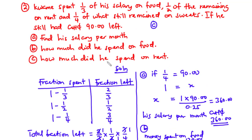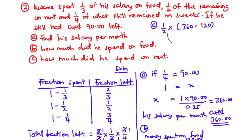For part c, we find how much he spent on rent. From the question, after spending one third of his salary on food, he spent half of the remaining on rent. So money spent on rent equals one half times the remaining amount. The remaining amount is the total 360 minus the amount spent on food, which is 120. So it's one half times 240. Two goes into 240 twelve times, giving 120 Ghana cedis. The amount he spent on rent is 120 Ghana cedis.